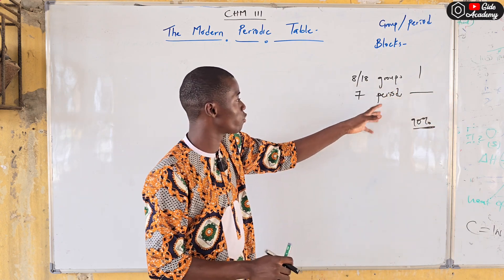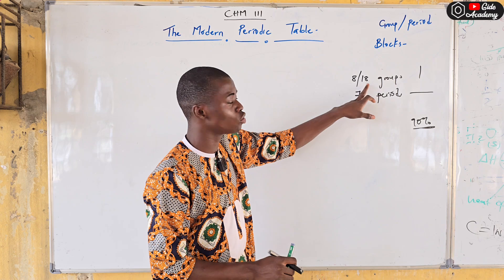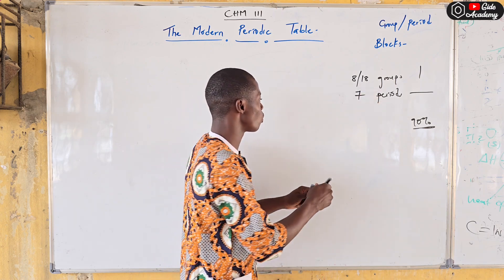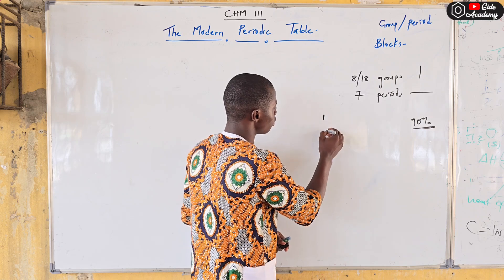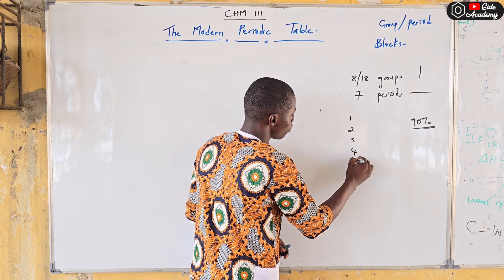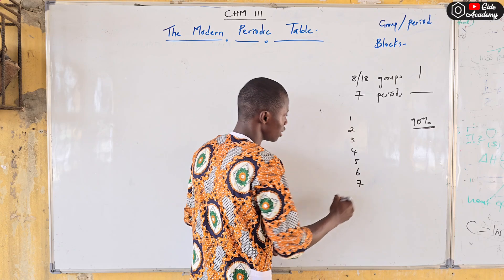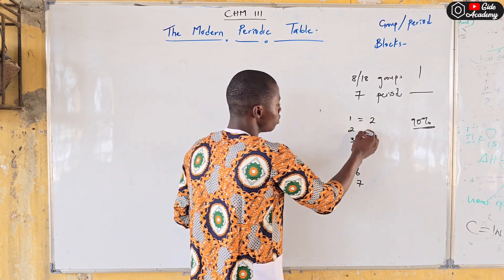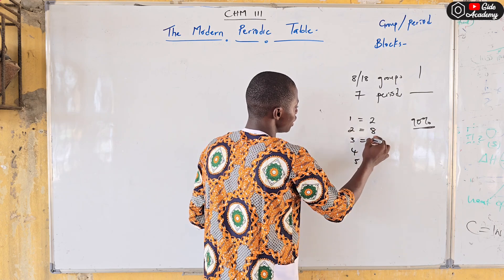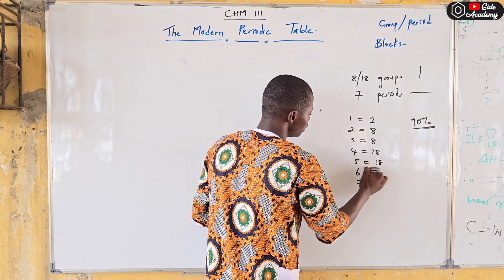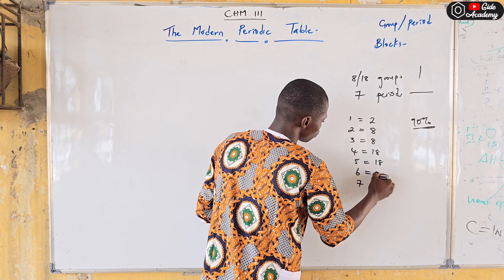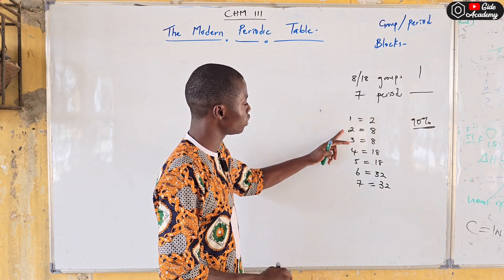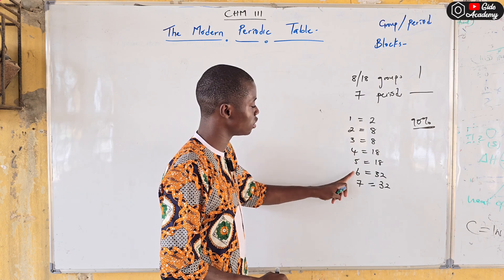To summarize: the vertical arrangement is group, the horizontal is period. We have groups 1 through 18, and just 7 periods. Period 1 has just 2 elements — hydrogen and helium. Period 2 has 8, Period 3 has 8, Period 4 has 18, Period 5 has 18, Period 6 has 32, and Period 7 has 32.